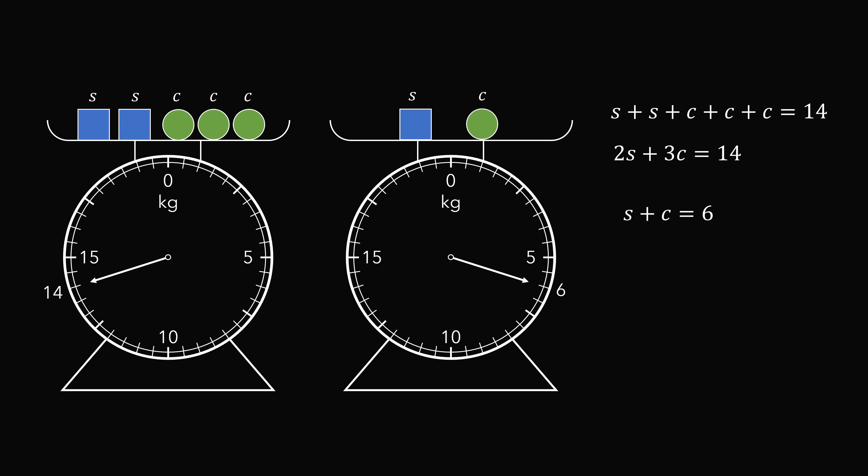There are many ways to go about solving this system of equations, but one way is to solve for one variable and substitute. So in the equation s plus c equals 6, let's solve for s. We get that s equals 6 minus c. Let's now focus on these two equations. We can substitute s equals 6 minus c into the first equation.